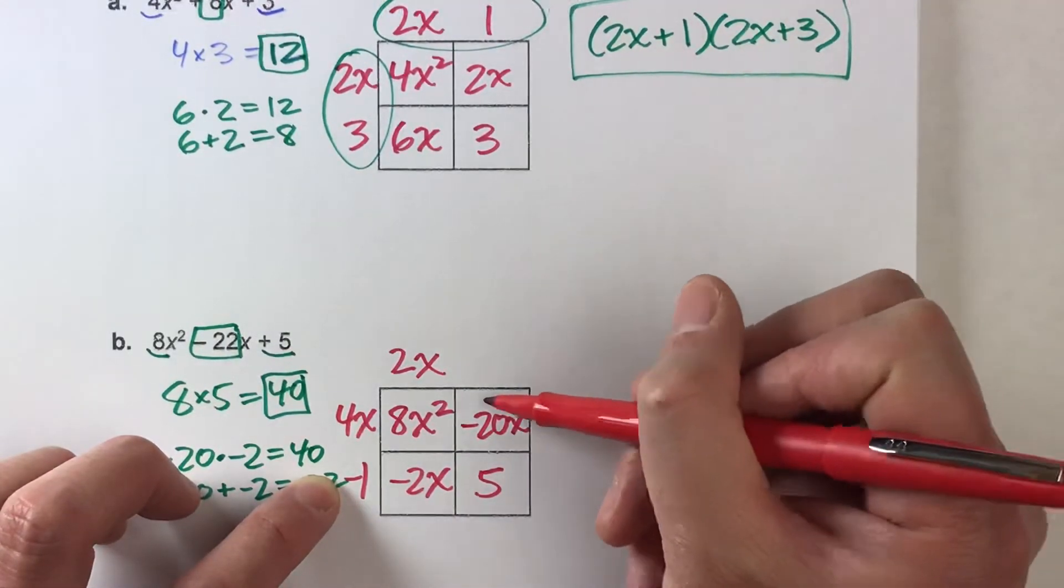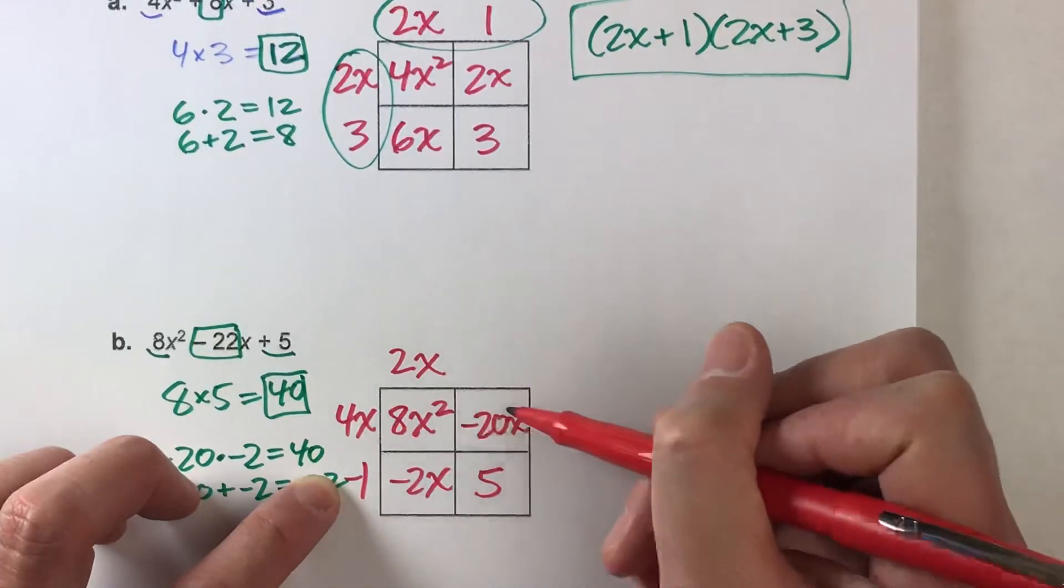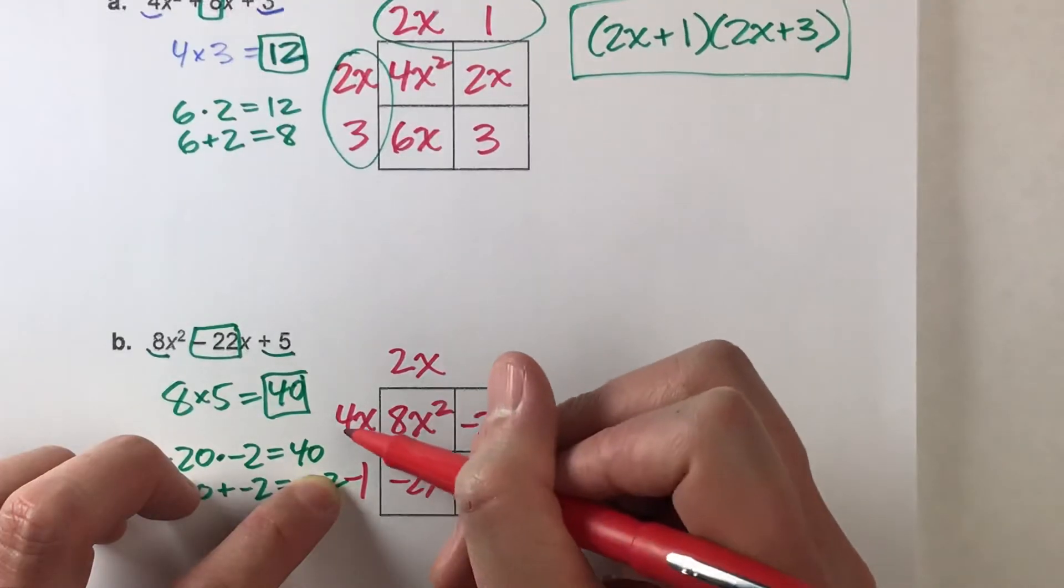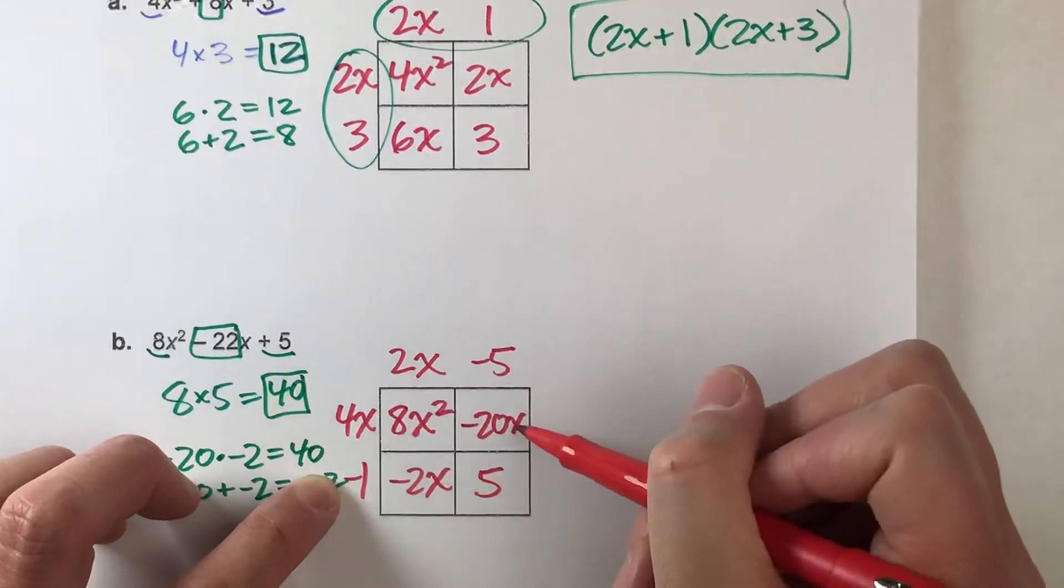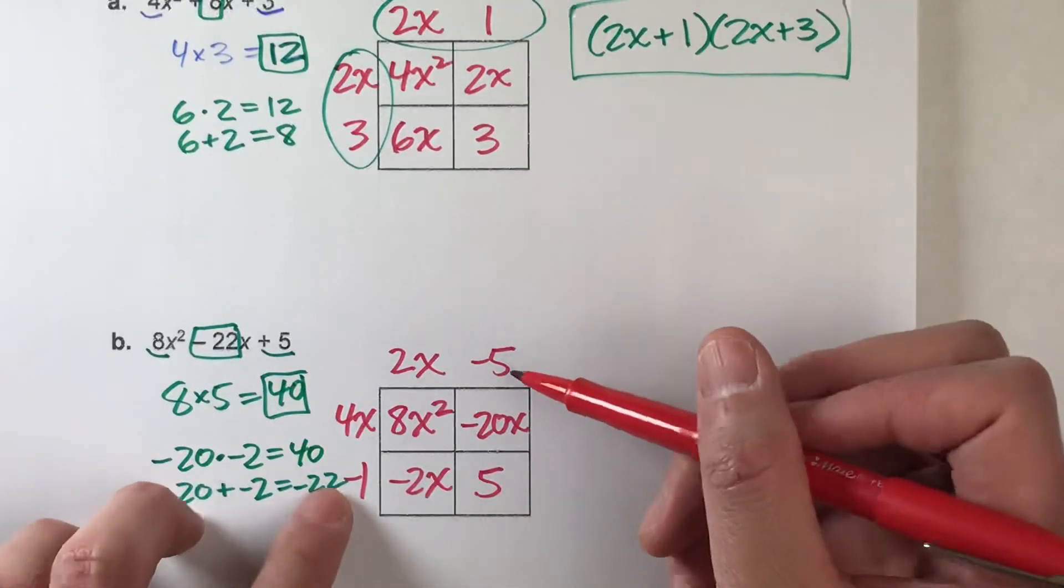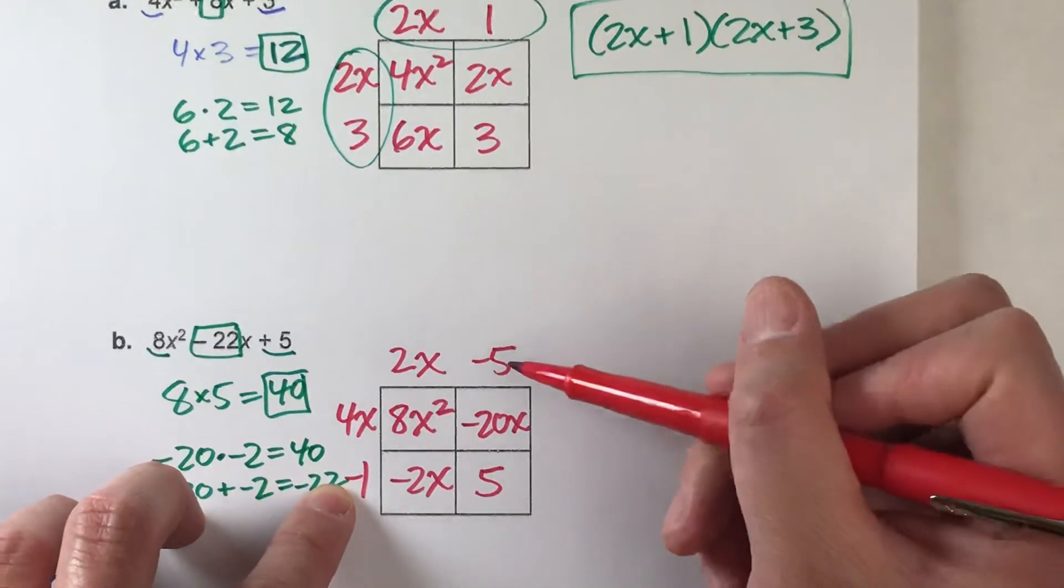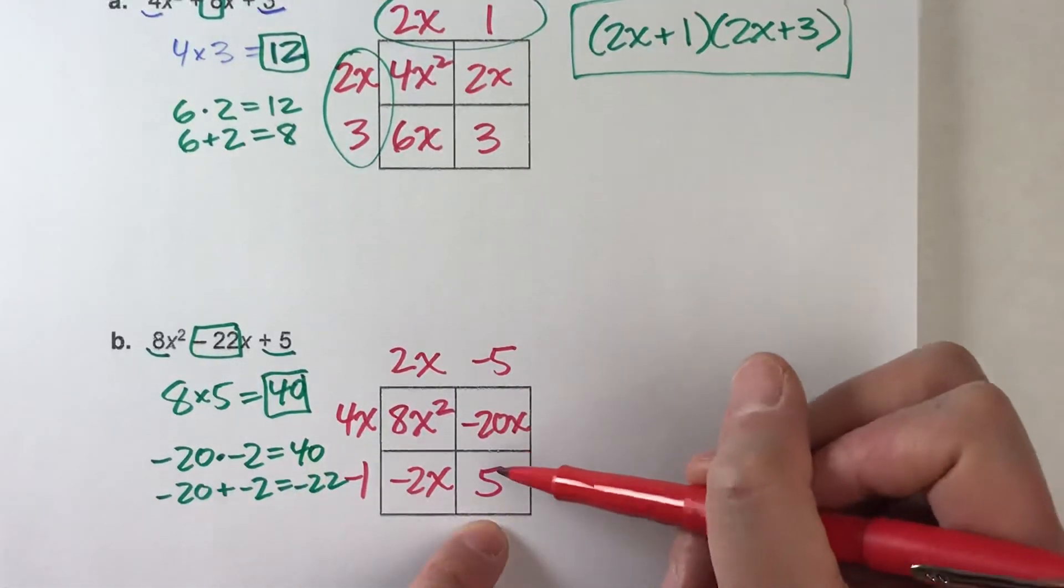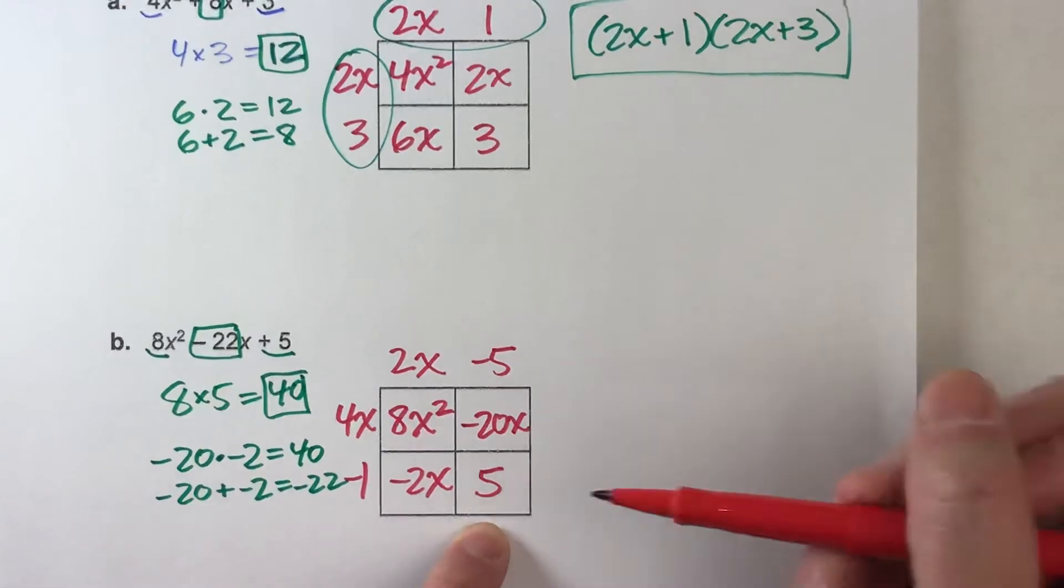Now, for this other side, 4x times what equals negative 20x? 4x times negative 5 equals negative 20x. And, of course, that last box, we're just going to check to make sure it works. Negative 5 and negative 1. Negative 5 times negative 1 is positive 5, which is exactly what's in there.